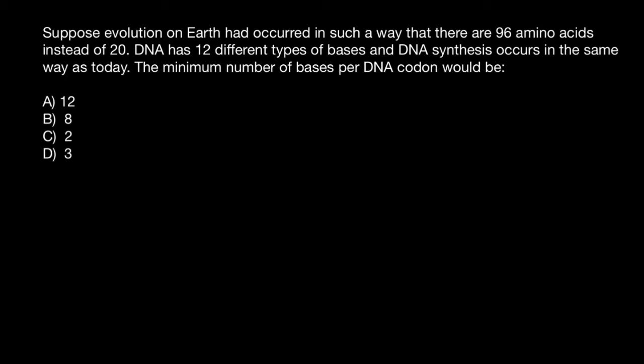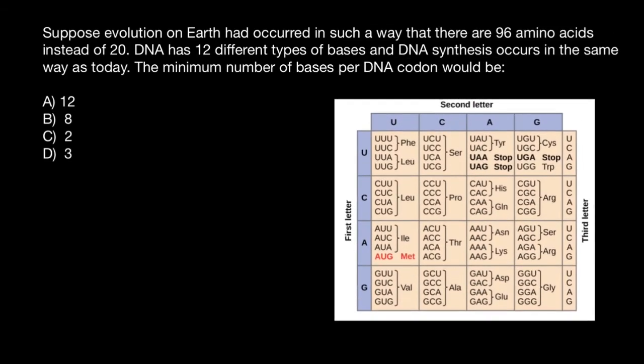Let me explain how to solve this problem using the codon table. As you see, we have four bases. This is a codon table based on messenger RNA, so instead of thymine, we have uracil here. So uracil, cytosine, adenine, and guanine.